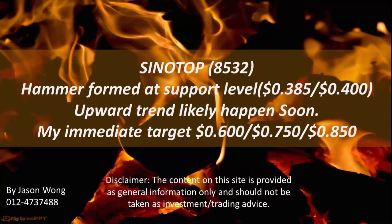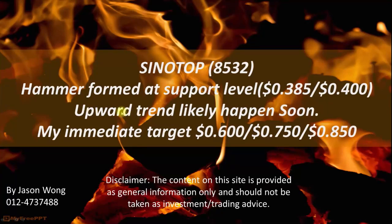After 5 days later, now I would like to do a follow-up. What happened is now we do see a hammer form at the support level which is 38 and a half to 40 cents. I would like to explain that typically when the support is found at this critical level, especially when we see the hammer down there, based on past experience, the upward trend likely will happen soon. I will go into the next level of detail on what is a hammer and where is the support line, and I will share with you guys.